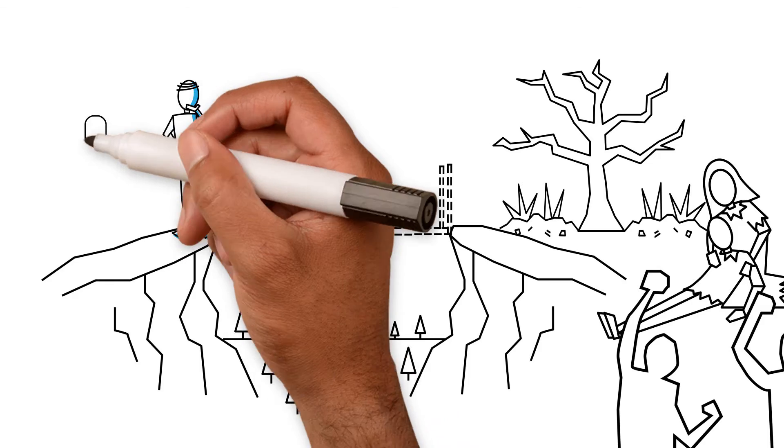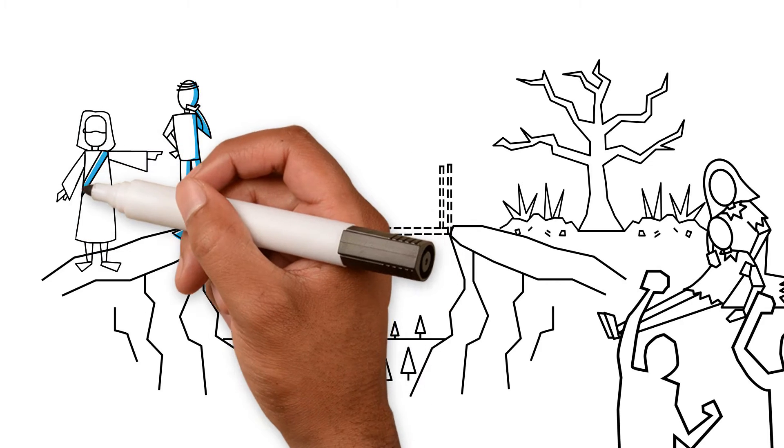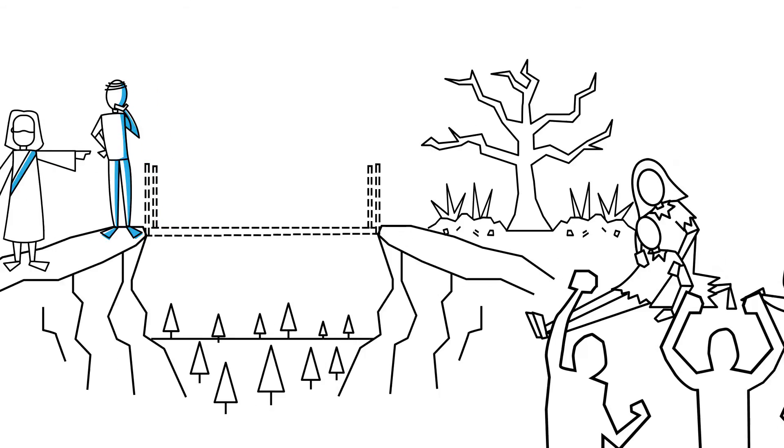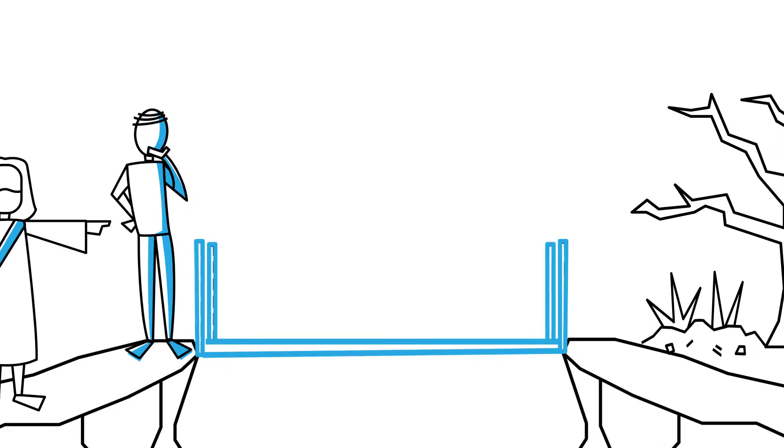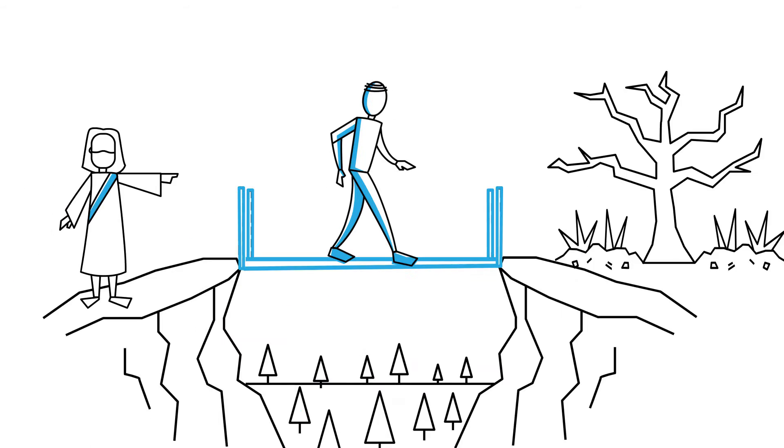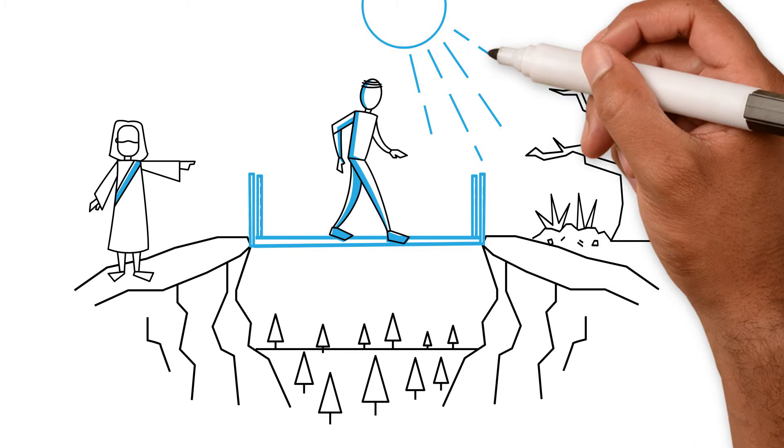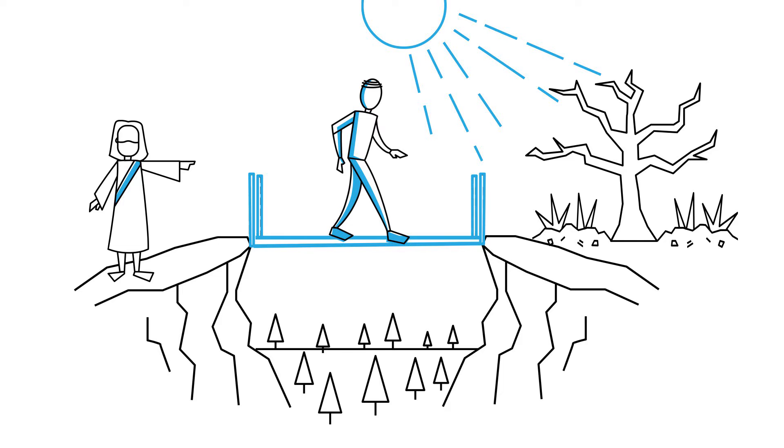Every disciple, every follower of Jesus, needs to be able to see not just where God's kingdom is, but where God's kingdom isn't. Kingdom work is about entering into those gaps and dark places, working to close the chasms and bring light and life during our time here on earth.